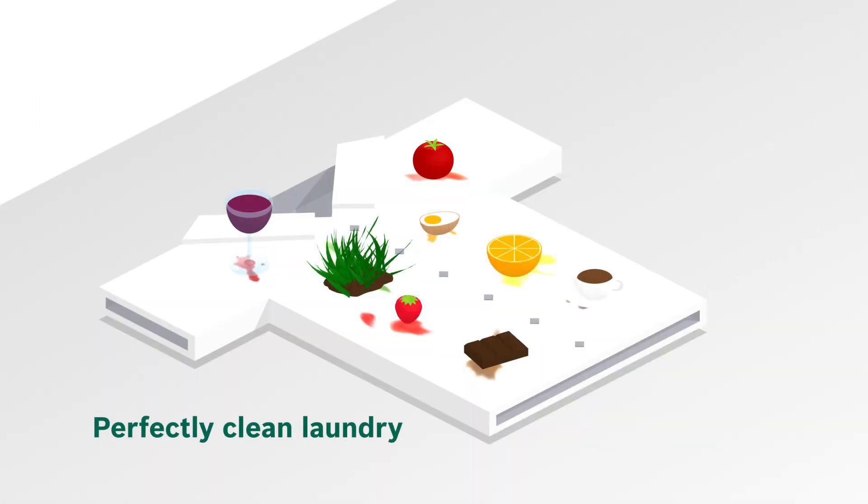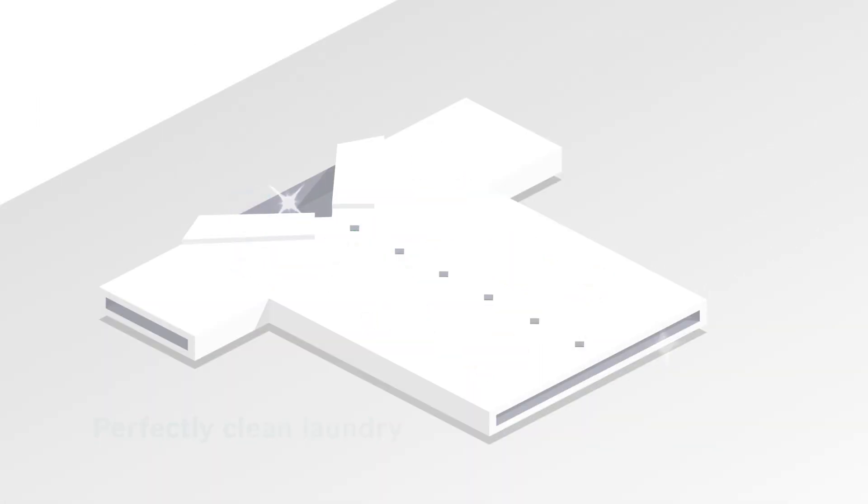No matter what kind of stain, your laundry gets perfectly clean. This is anti-stain. It removes up to 16 of the most stubborn stains and gives you perfect washing results.